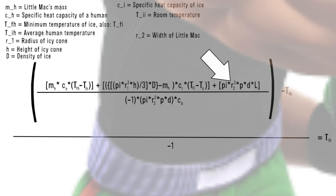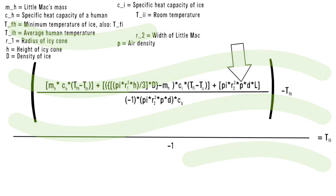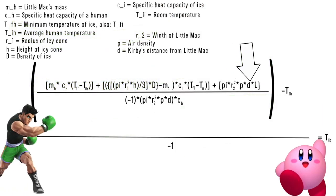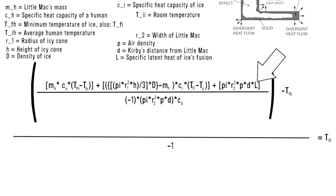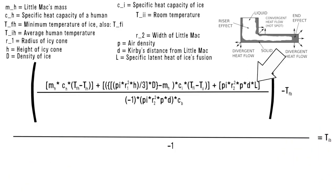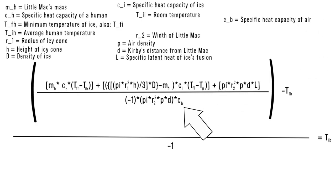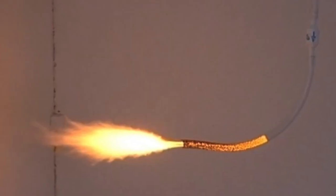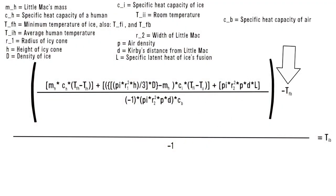R sub 2H is half the diameter of the area on Little Mac that Kirby is affecting. P is the density of air. Lowercase d is how far away Kirby is from Little Mac. L is the specific latent heat of fusion of the ice. C sub B is the specific heat capacity of air. T sub FB is the minimum temperature for ice, for the third time.